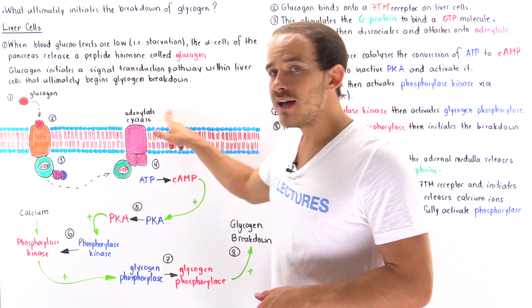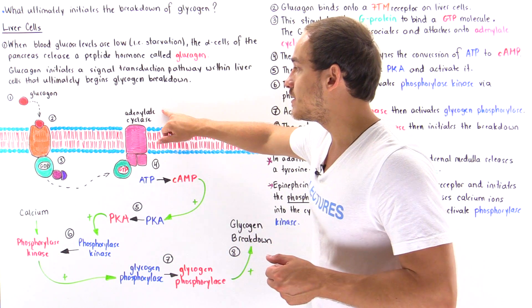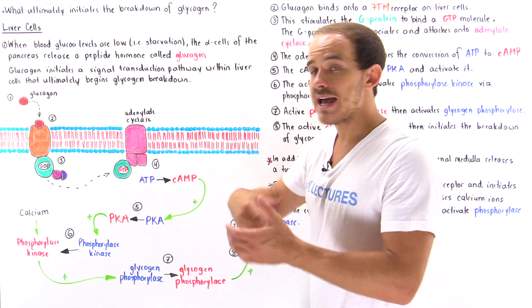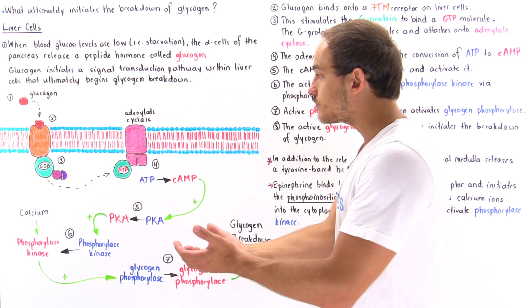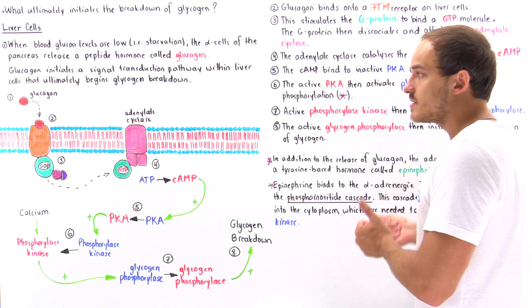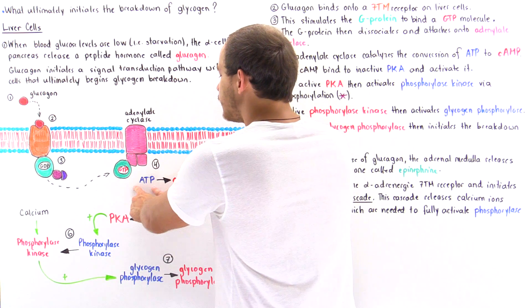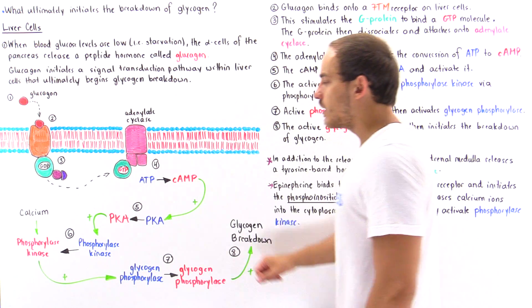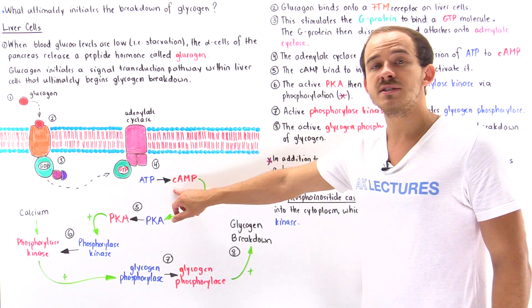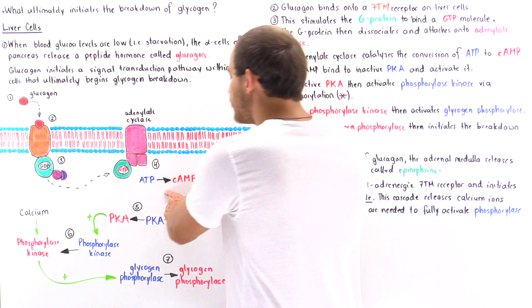The activated G protein stimulates adenylate cyclase, an enzyme, to catalyze the transformation of ATP molecules into cyclic AMP molecules.